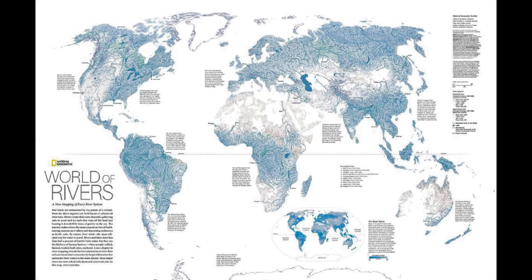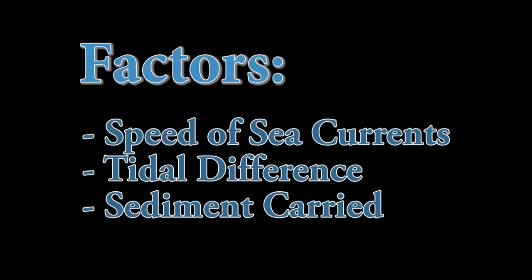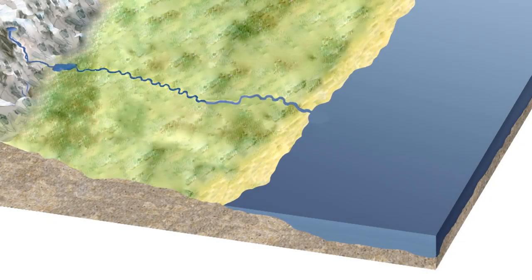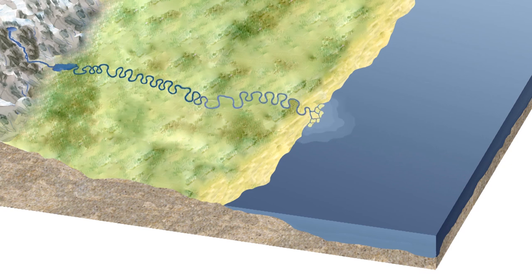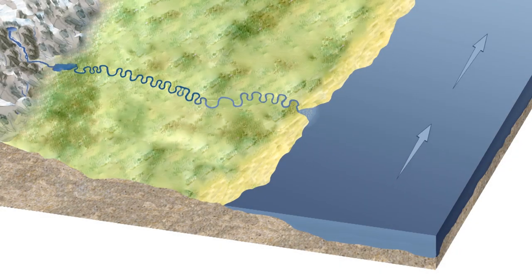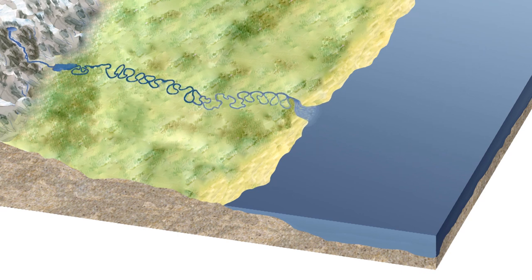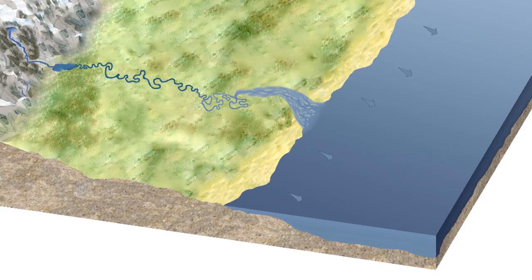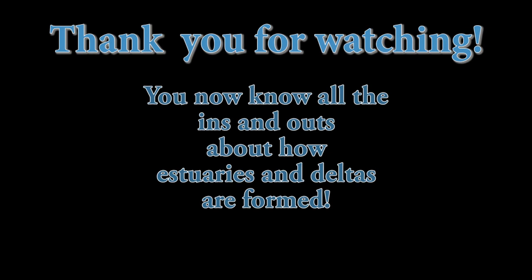Everywhere in the world there are rivers entering the ocean, and all form an estuary or delta. Which one is formed depends on various factors: the speed of the sea current, the tidal difference, and the amount of sediment carried. All these factors together determine whether a delta will be formed — due to little current, little tidal difference, and a lot of sediment — or an estuary, when the current is strong or the tidal difference is big and not too much sediment is carried. Hopefully you found this video useful and now better understand how estuaries and deltas are formed.